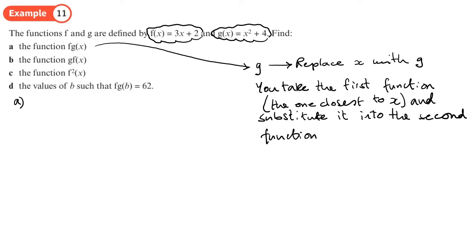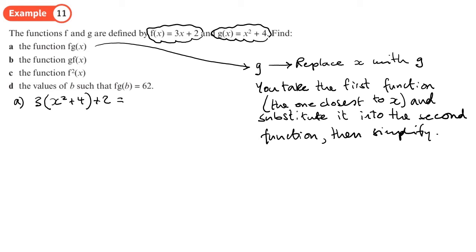So we take the first function g and take the f function, replacing x with what g is. So 3x becomes 3 lots of (x² + 4) plus 2. We can simplify that to 3x² + 12 + 2, giving us 3x² + 14 for that one.